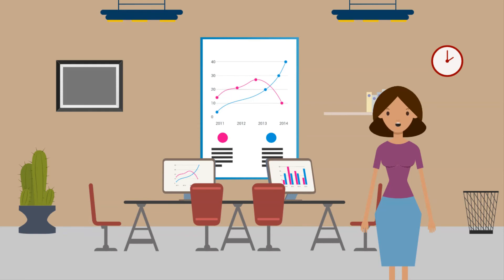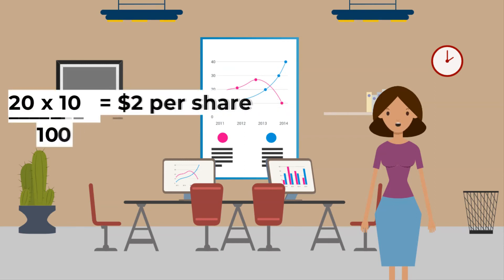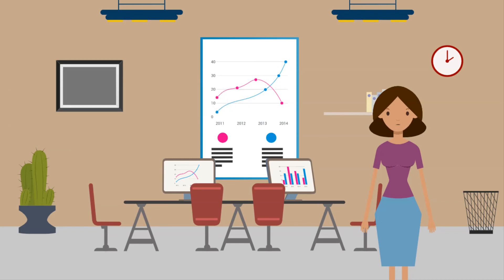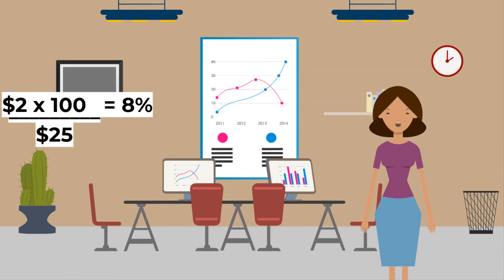If the share has a face value of $20 and the market price is $25, and the company declares a 10% dividend, then you would receive $2 per share. Yield is the dividend expressed as a percentage of market price. In this case the yield would be 8%.